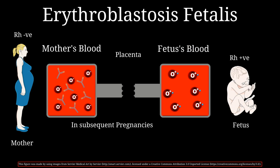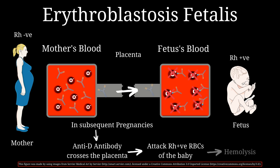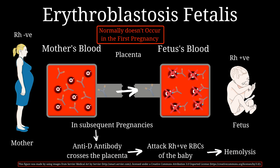This usually does not affect the first baby because by the time these antibodies are produced, the baby has already been delivered or is about to be delivered. However, if the same mother gets pregnant again with a fetus with RH positive blood, the anti-D antibodies present in the mother's circulation will cross the placenta and attack the RH positive red cells of the fetus, eventually leading to hemolysis. Erythroblastosis fetalis does not usually occur in the first pregnancy — it is seen more frequently in subsequent pregnancies.